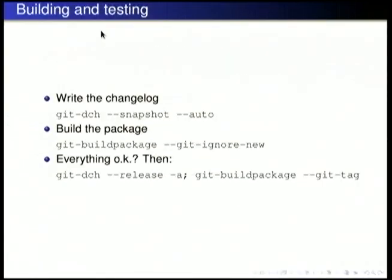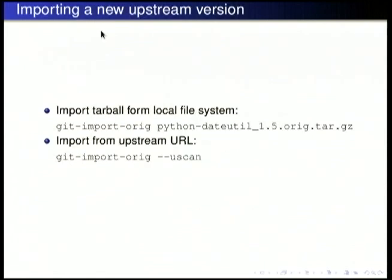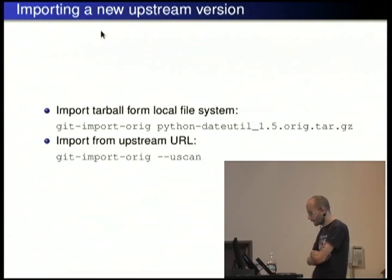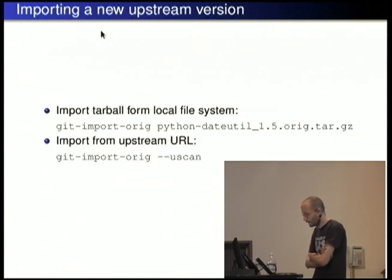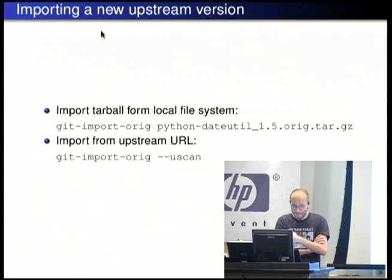I'll skip over building the package since that's just calling build-package. At the end you can pass `--git-tag` when building so it creates a tag in the version control system for you. To import a new upstream tarball, use `git import-orig` — you can give it the tarball directly, or use `--uscan` which invokes uscan to check for a new upstream version, download it, commit it to your VCS, and merge it onto your Debian branch.